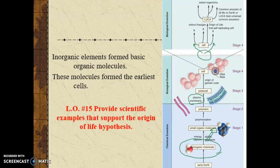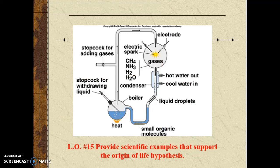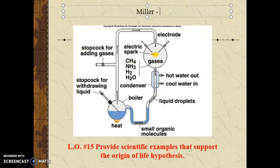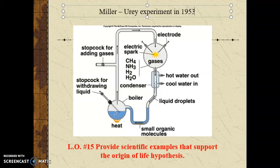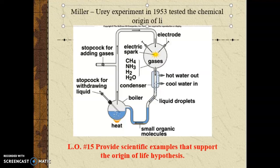This is a hypothesis being tested and tried to be understood. Can we test for this? Let's jump back to 1953. Miller and Urey did that exact thing. They tested the chemical origin of life, thinking: is it possible this is how life arose on Earth?